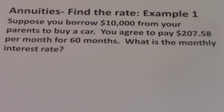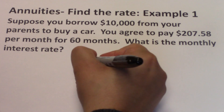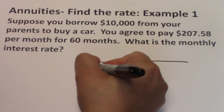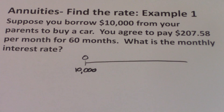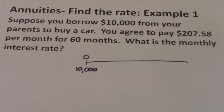Here you're getting $10,000 today from your parents, so $10,000 is the cash inflow to you earlier on the timeline. And then after you get that $10,000, you're going to be paying $207.58 each month. This is a cash outflow to you.